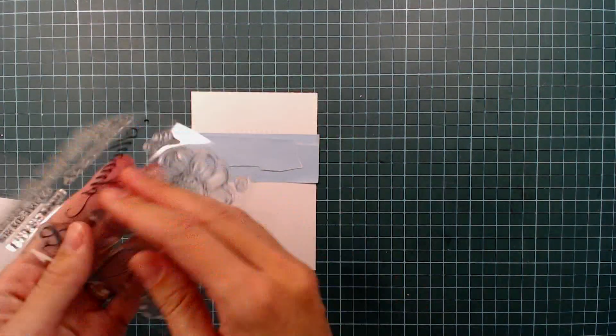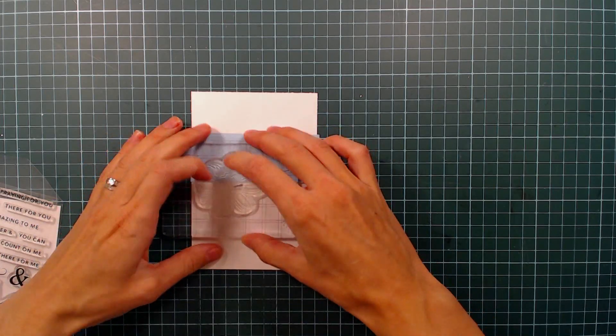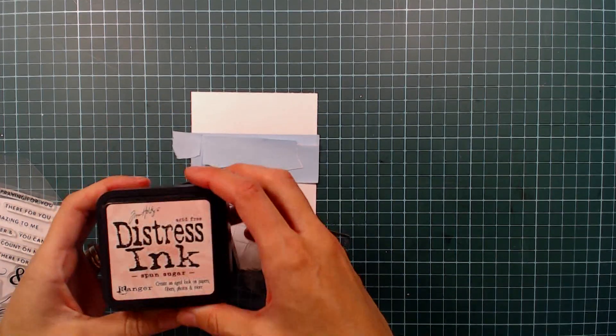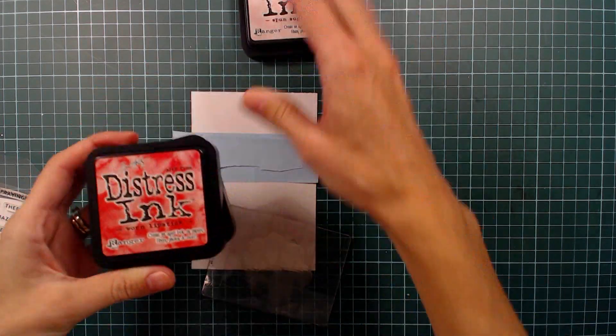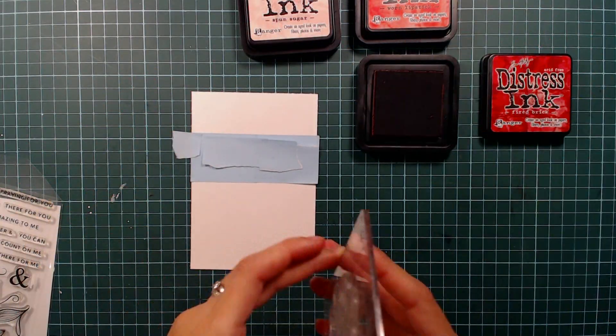When my masking was finished I can start stamping and I will be using this flower from the Always and Forever stamp set. I'm going to stamp the flowers in three different distress inks. I'm using Fired Brick, Worn Lipstick and Spun Sugar.